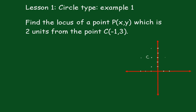Lesson 1, Circle Type Example 1. Find the locus of point P, which is 2 units from point C.